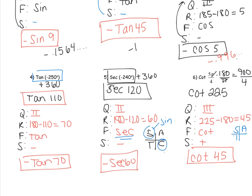For number 6, convert 5π/4 to degrees to get 225. That's quadrant three; the reference angle is 225 minus 180, which is 45. The function is cotangent. In quadrant three, tangent is the only thing positive, and that includes its reciprocal cotangent — remember, the C in ASTC stands for cosine, not cotangent. So we write positive cotangent of 45.